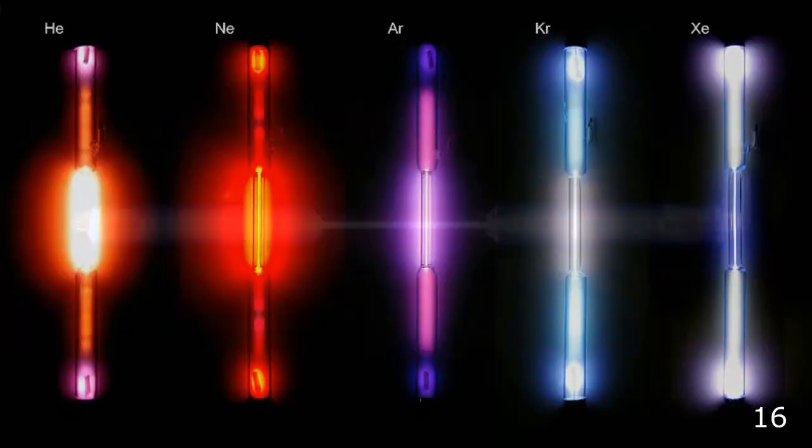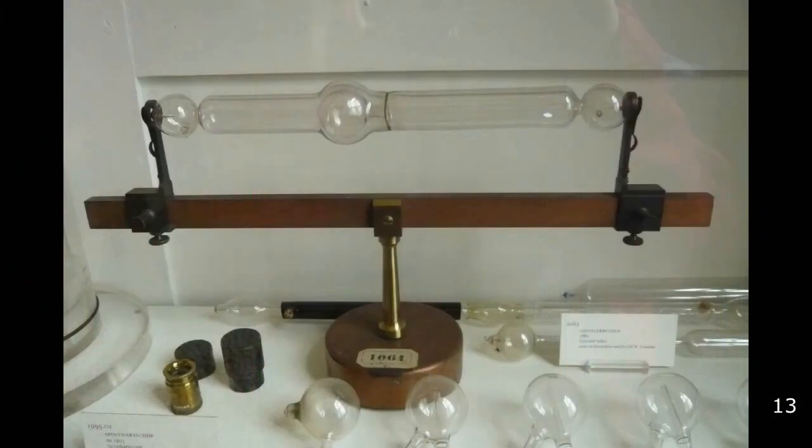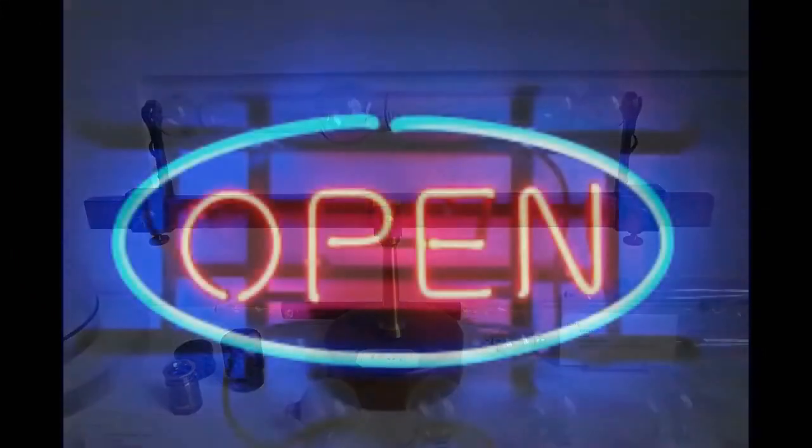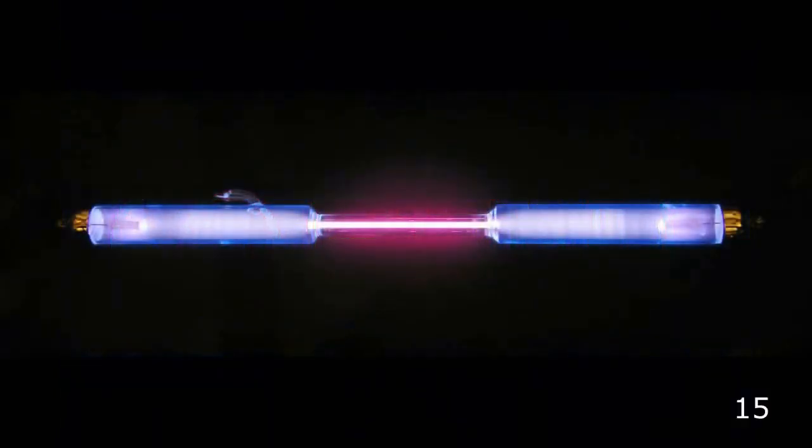He also discovered that by replacing the air with a pure gas such as neon or argon, that different colored lights could be created. This really was the first neon bulb ever invented. And it's the precursor to neon signs that we see in commercial use today. Now, keep in mind that Geisler could only get the gases in these tubes to glow when they were under very low pressure. In other words, he used a vacuum pump to suck all of the air or most of the air out. And when he added new gases, he only added a small amount so that the pressure inside the tube was very low.